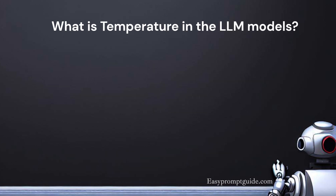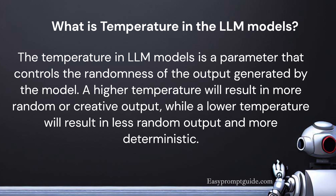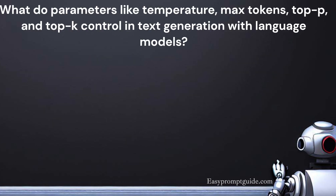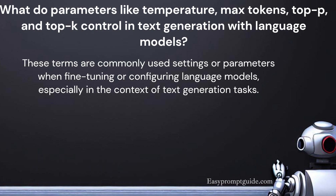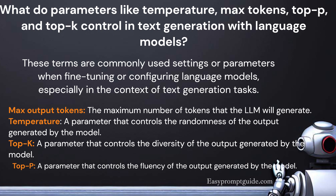What is temperature in LLM models? Temperature is a parameter that controls the randomness of the output generated by the model. A higher temperature results in more random or creative output, while a lower temperature results in less random, more deterministic output. What do parameters like temperature, max tokens, top P, and top K control in text generation? Max output tokens controls the maximum number of tokens the LLM will generate. Temperature controls randomness. Top K controls the diversity of the output. Top P controls the fluency of the output generated by the model.